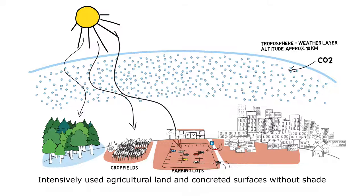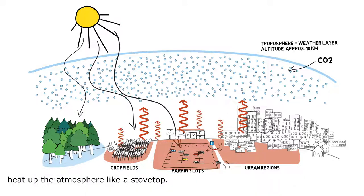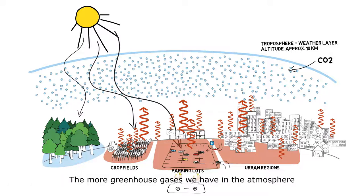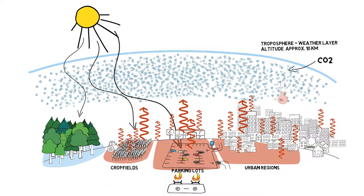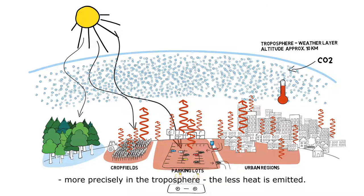Intensively used agricultural land and concrete surfaces without shade heat up the atmosphere like a stovetop. The more greenhouse gases we have in the atmosphere, more precisely in the troposphere, the less heat is emitted.